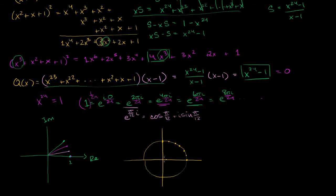This over here is π/12 — that's e to the π/12·i. This over here is 2π/12, or π/6. This over here is 3π/12, or π/4. This over here is 4π/12, or π/3. And this right over here is 5π/12. Then this is 6π/12, or π/2.